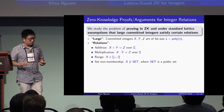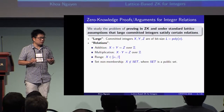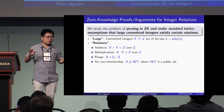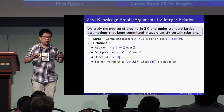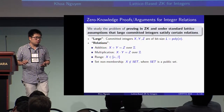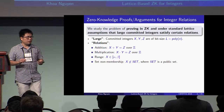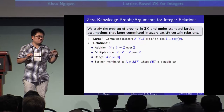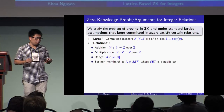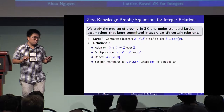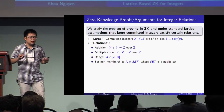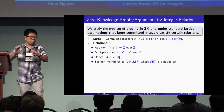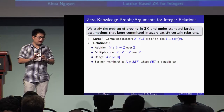The problem is interesting in the context of cryptographic protocols when we do some operations with large integers and we want to ensure some privacy-preserving features. For example, range arguments may have application in anonymous credentials, anonymous cryptocurrencies, and e-voting. And set non-membership arguments may have application in blacklisting, where you want to prove that your key does not belong to a given list of blacklisted keys.